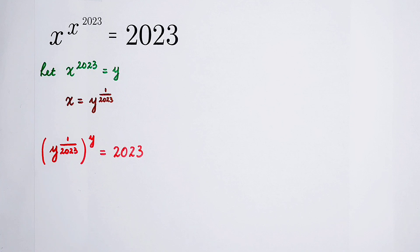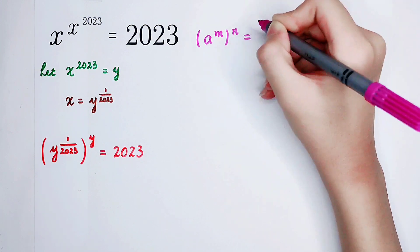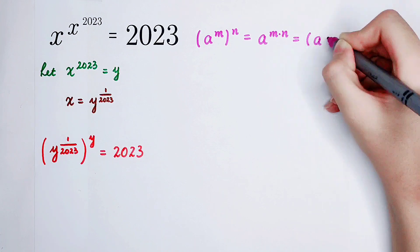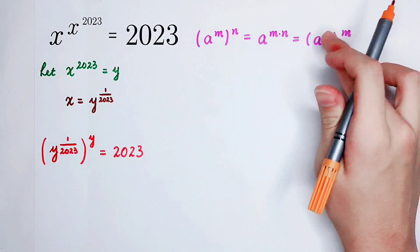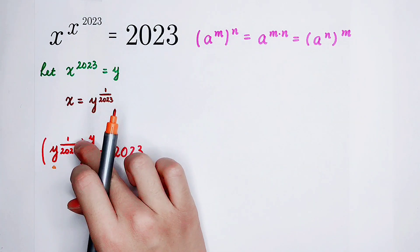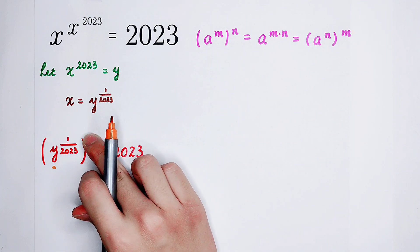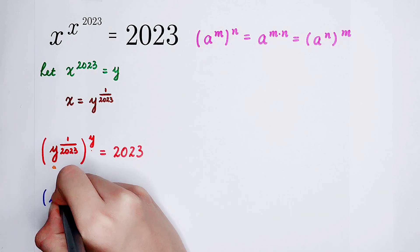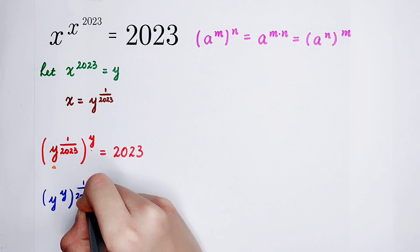We should use this formula: h to the power of m, and then also the power of n, is equal to h to the power of m times n. It is also equal to h to the power of n, and then also the power of m. So we use the rule that a is y, m is 1 over 2023, and n is y. This gives us y to the power of y, and then also the power of 1 over 2023.